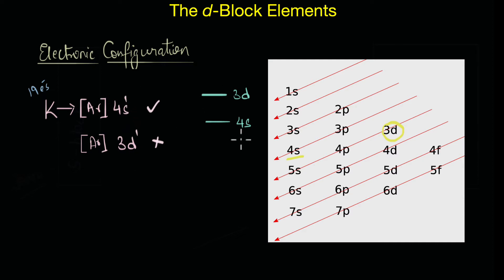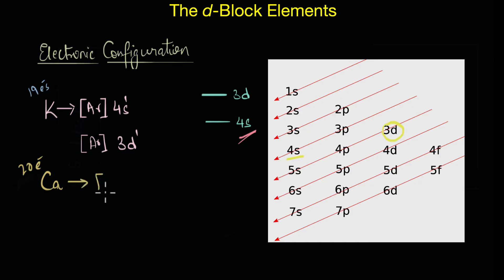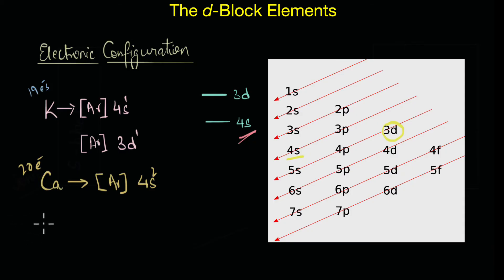Similarly, calcium with 20 electrons has an electronic configuration of [Ar]4s² and not [Ar]3d². The element that follows calcium is the d-block element scandium, which has 21 electrons, but something interesting happens between calcium and scandium.